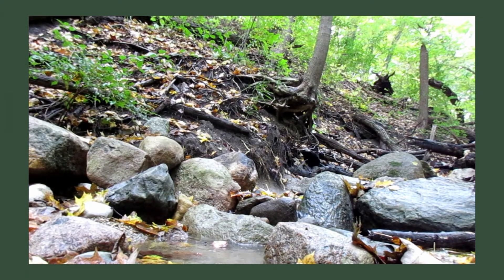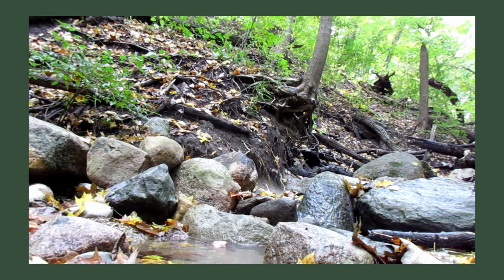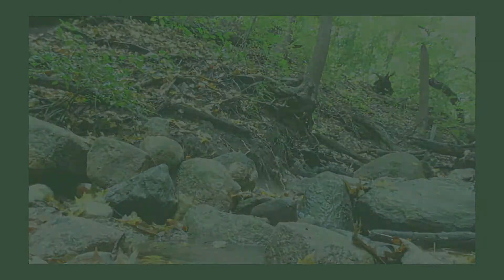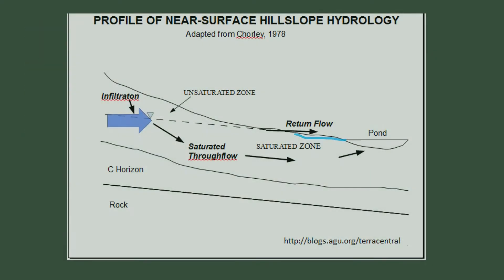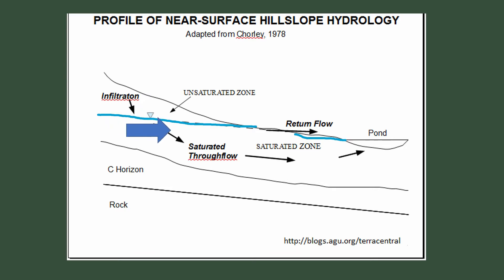The first mechanism we're going to talk about is saturated subsurface flow. Saturated subsurface flow is usually found in hill slope back slopes and relatively flat places. The ground becomes saturated and the water seeps to the surface but continues to flow downstream.